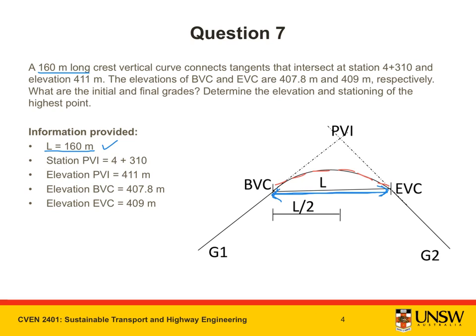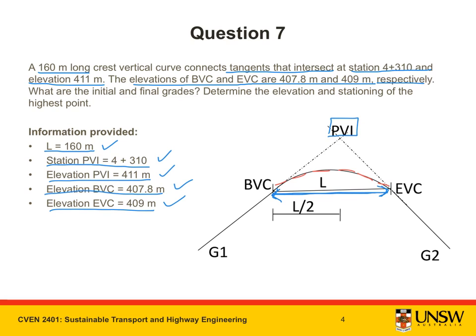We are also told that the station and elevation of where the tangents intersect are 4+310 and 411 meters. We are also told that the elevations of BVC and EVC are 407.8 meters and 409 meters respectively. Now I have extracted all of the information that has been provided.